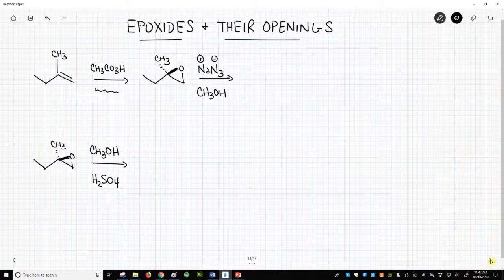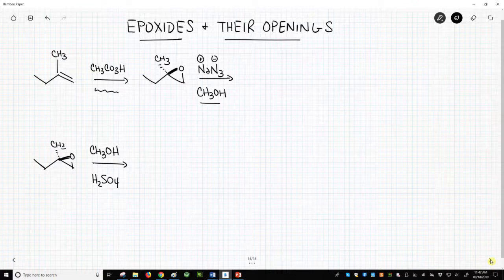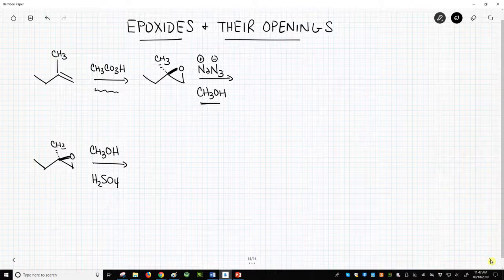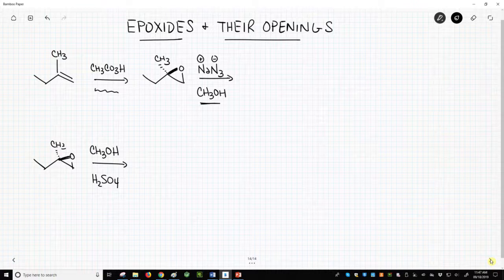Let's react our epoxide with sodium azide, NaN3, in a protic solvent like water or, in this case, methanol. Azide, as a strong nucleophile, is reactive enough to open an epoxide without any assistance. It just plows right into the strained three-membered ring.